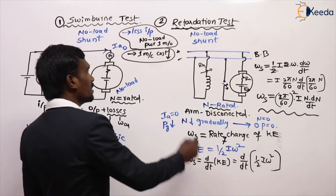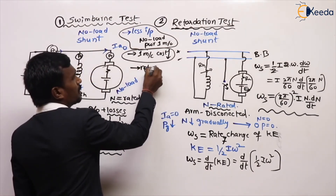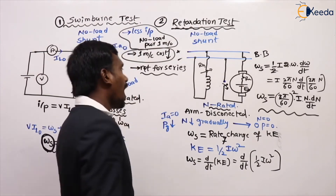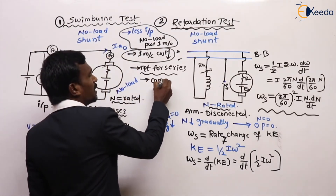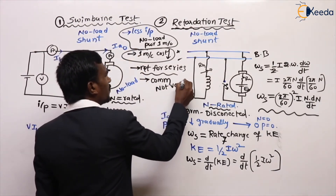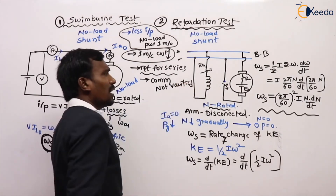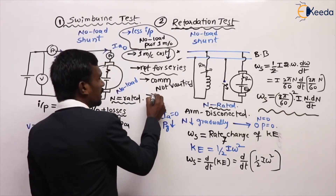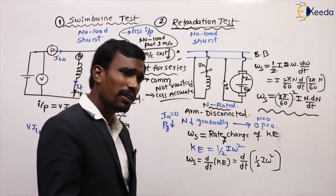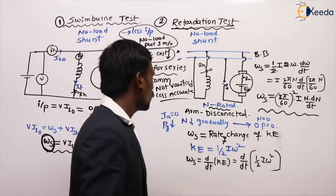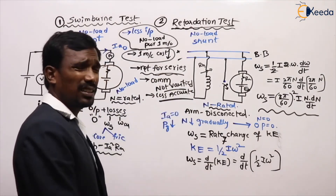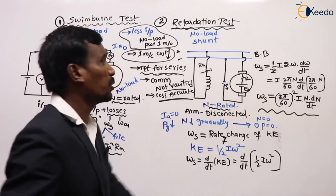The disadvantage is that these tests cannot be applied to series motors. And since this is a no-load condition, there is no rated armature current, so commutation is not verified. Commutation is not verified and these tests are not applicable to series motors. Also, less accurate — there is no effect of temperature because load is not there, so there is less effect of temperature, making the results less accurate.